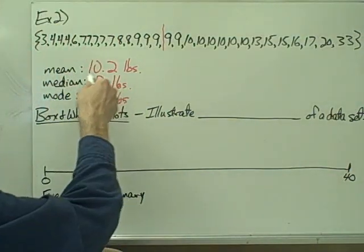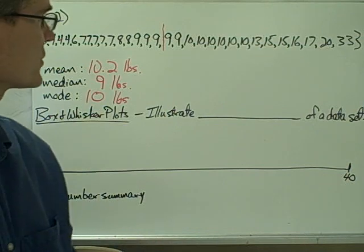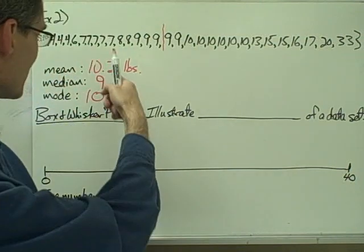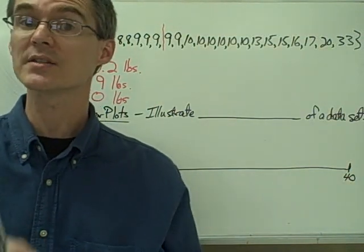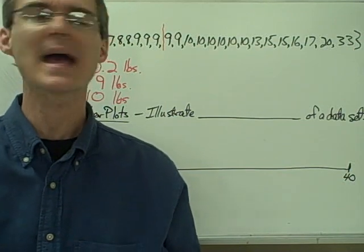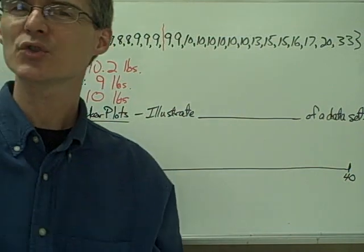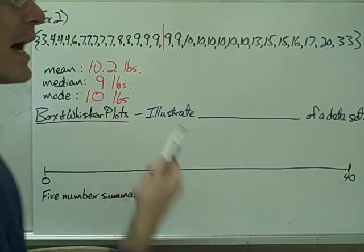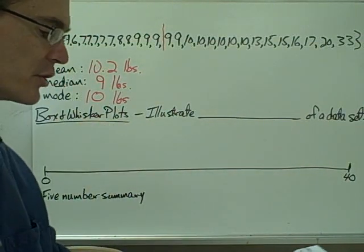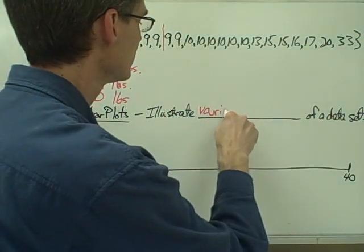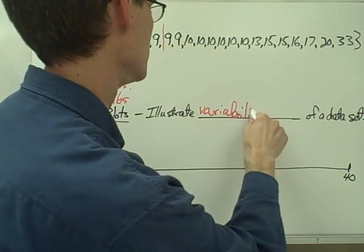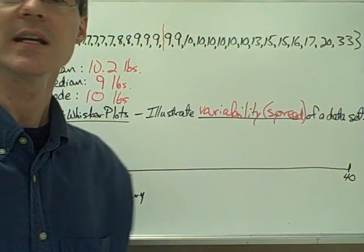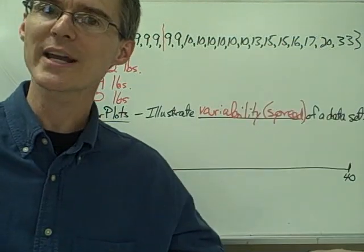My mean, median, and mode are all pretty close to the same value — about 9 or 10 pounds is a good way to summarize the average weight of a backpack at Owen's school. But I might also want to describe this data set in a little more detail. One way to do that is using something called a box and whisker plot, or box plot. Box and whisker plots illustrate something called the variability or spread of a set of data — not just what's the center point, but how spread out the data are.